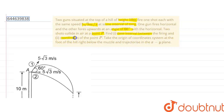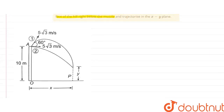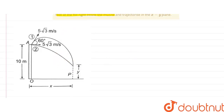We have to find: first, the time interval between the fires; and second, the coordinates of point P. It is given that the origin of the coordinate system is at the foot of the hill below the muzzle, and the trajectories are in the x-y plane. Shot one is the first shot and shot two is in the horizontal direction.